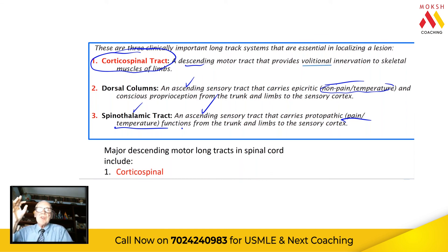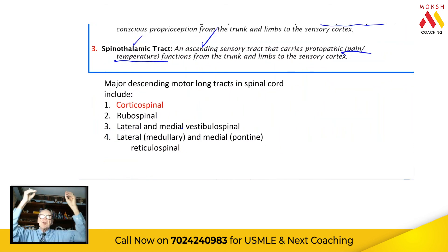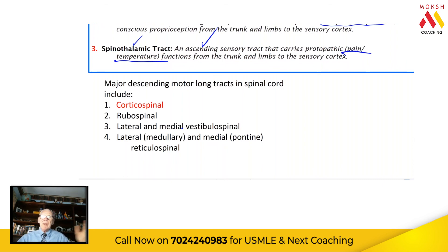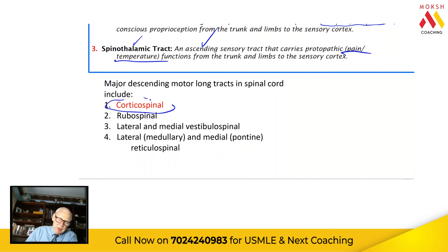These three are the critical long tracks for clinical manifestations of cord lesions, and the one we'll examine today is corticospinal. The other descending motor systems — rubrospinal, vestibulospinal, and reticulospinal — exist, but they deal with trunk functions and reflex or postural movements, not the limbs specifically. Corticospinal is the dedicated system for limb control, and the rest of our discussion will focus on it.